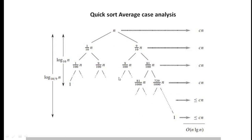So the average case time complexity is O(n log n), even with a 1:9 ratio split, which is very much closer to balanced partitioning. The only case where we get O(n²) is when the input is in sorted order and we take the first or last element as pivot. The worst case can be improved by taking the middle element as pivot. That is how we get O(n log n) for the average case.